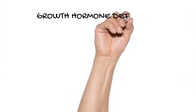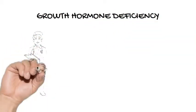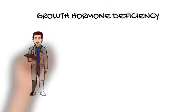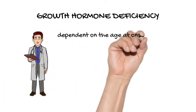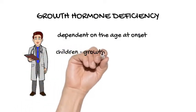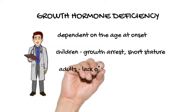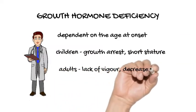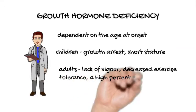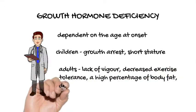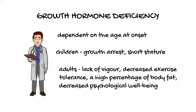Growth hormone deficiency. The effect of growth hormone deficiency is also dependent on the age at onset. In children, manifestations are growth arrest, short stature, and sometimes hypoglycemia. In adults, features include lack of vigor, decreased exercise tolerance, a high percentage of body fat, decreased psychological well-being, and a deleterious lipid profile that may increase the risk of cardiac mortality.